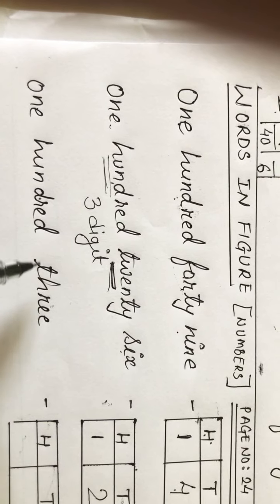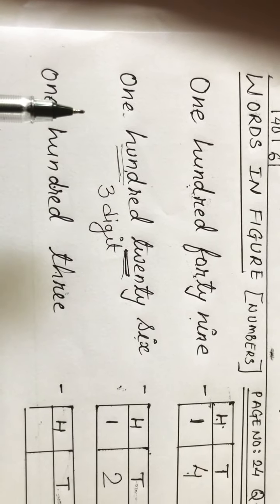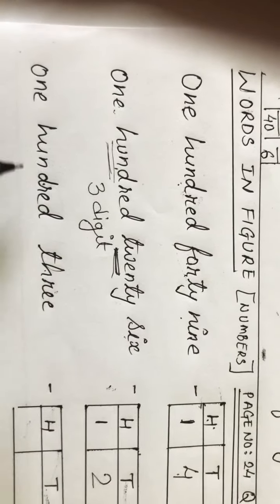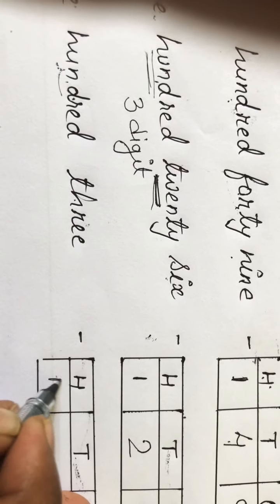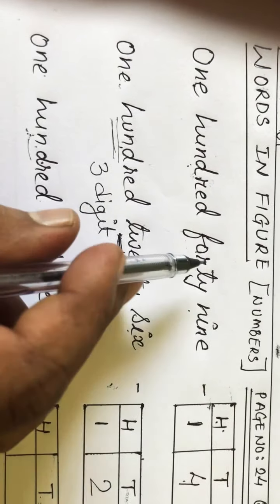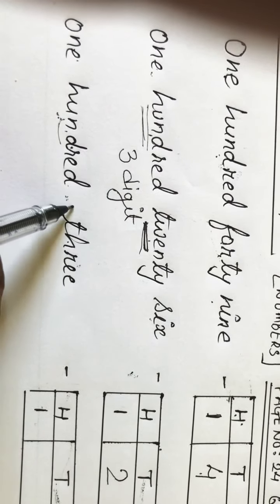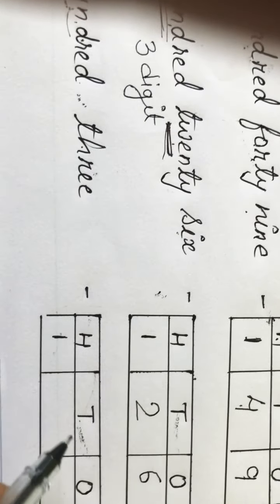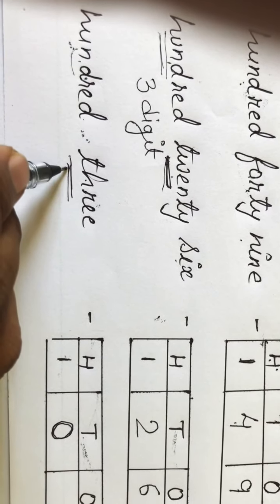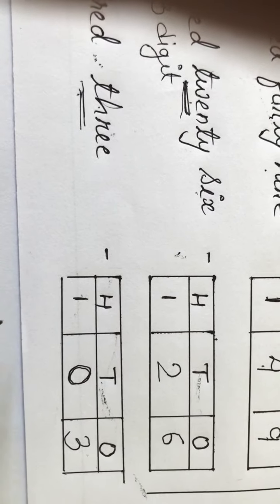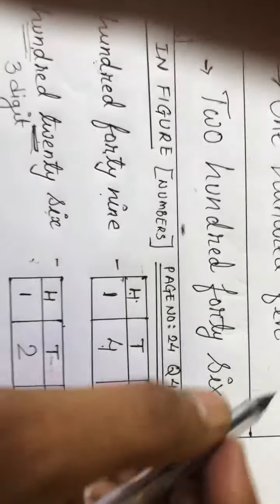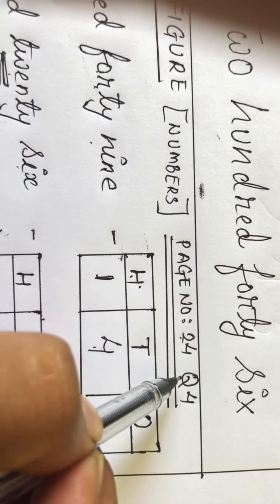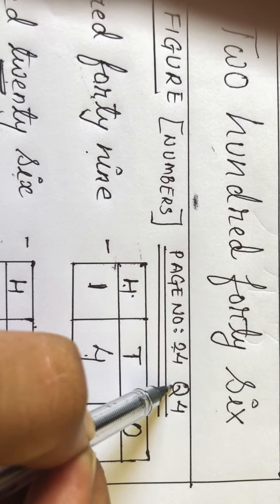Now see: 'one hundred three.' First decide how many digits it should have — three digits, because hundred is the highest place value. One hundred — write one. Then for tens place, nothing is given — kuch bhi nahi hai tens ki jagah — so write zero. And last, three is at ones place, so write three. The answer is 1-0-3. Hope you all understood. Homework: page number 24, question number four. If you have a doubt, message me on WhatsApp.